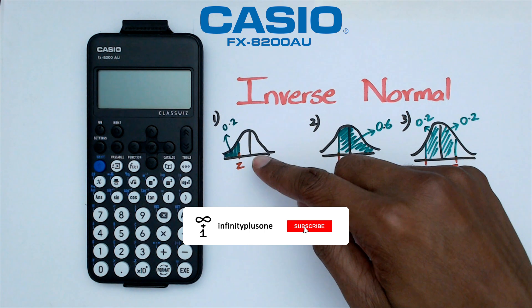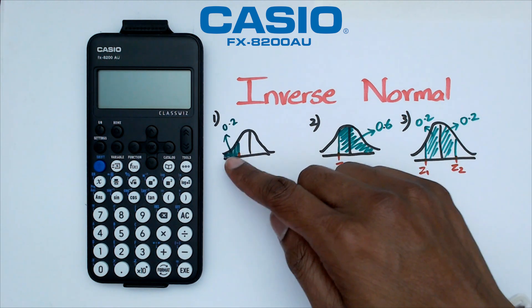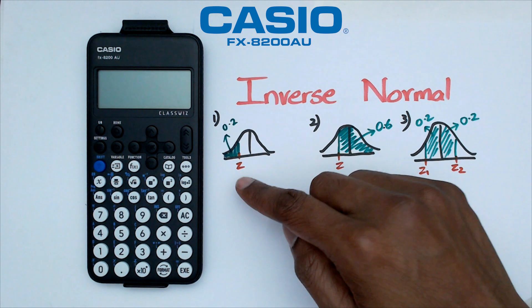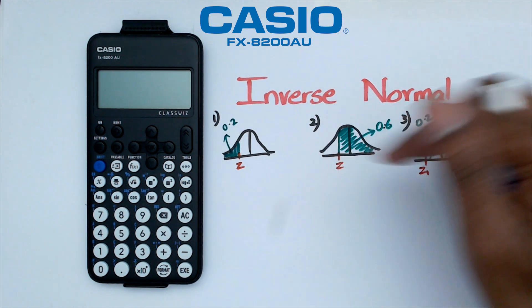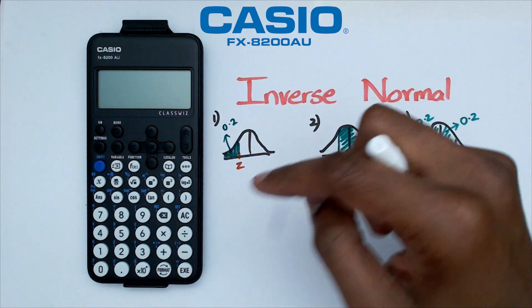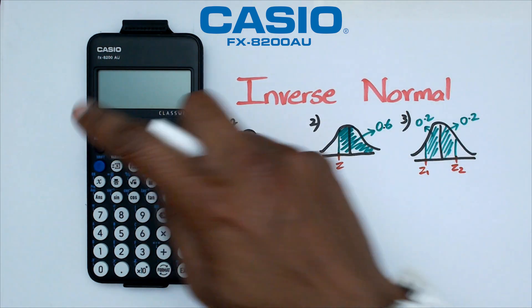Alright, so looking at question number one here, we've got the left tail of that area is 0.2 and we want to figure out what the Z is. Now I'm going to keep the mean as 0 and standard deviation as 1 for all of these three problems and I'm going to work through the answers. So the first thing you want to be doing is switching on the calculator,